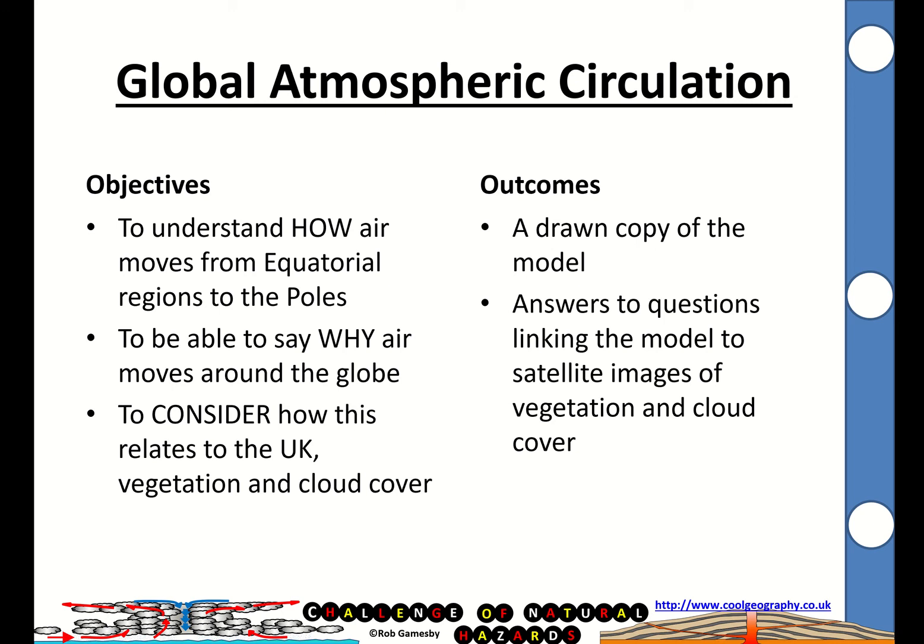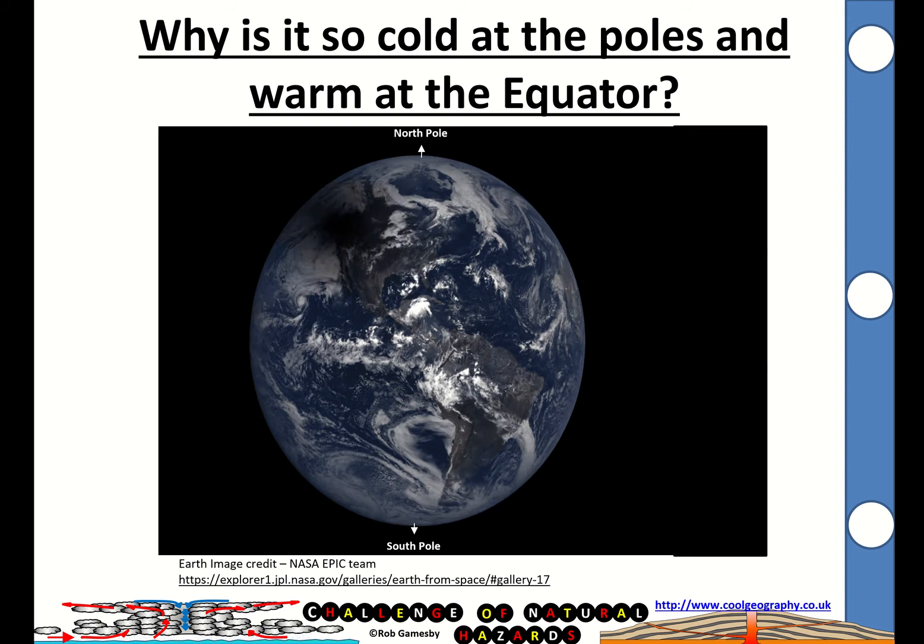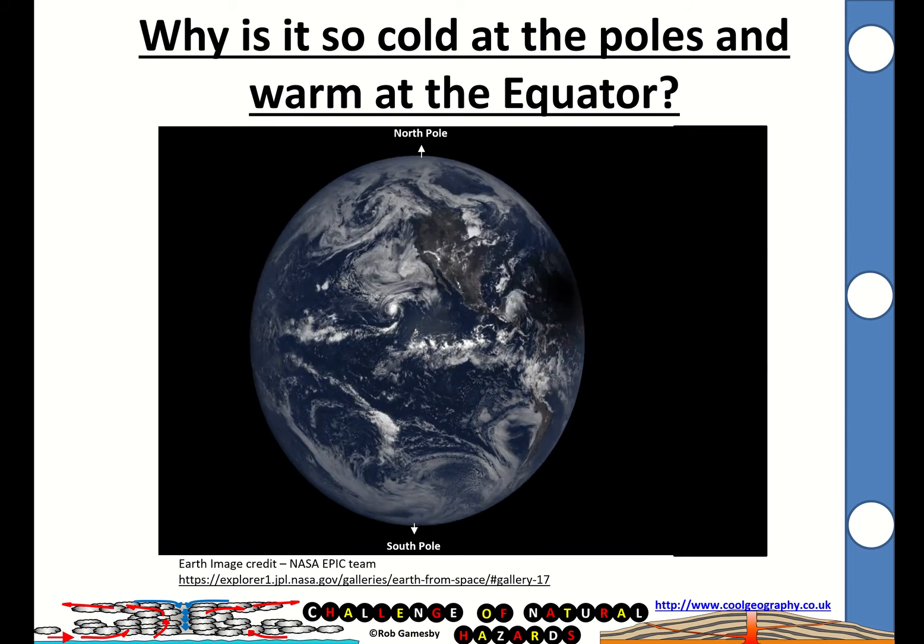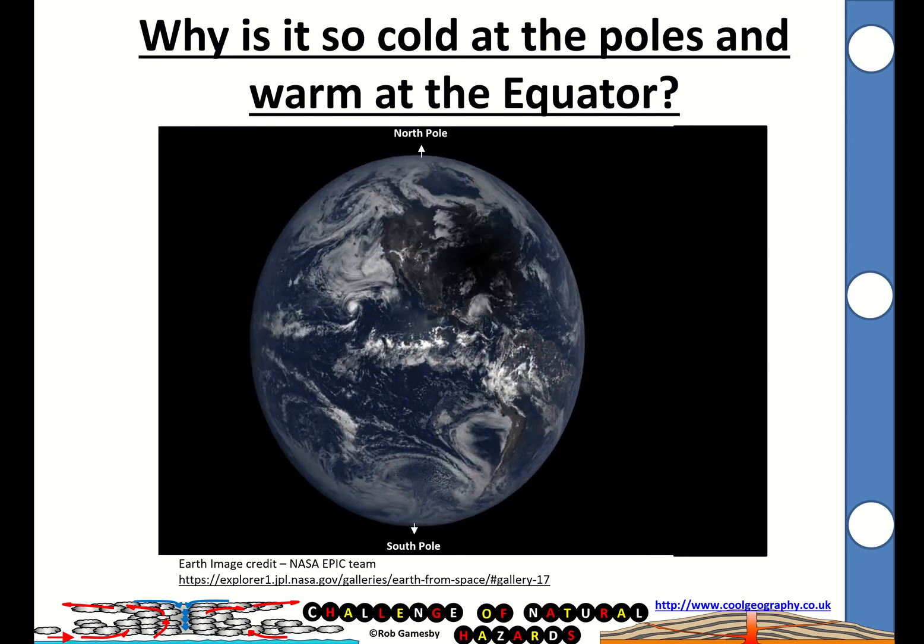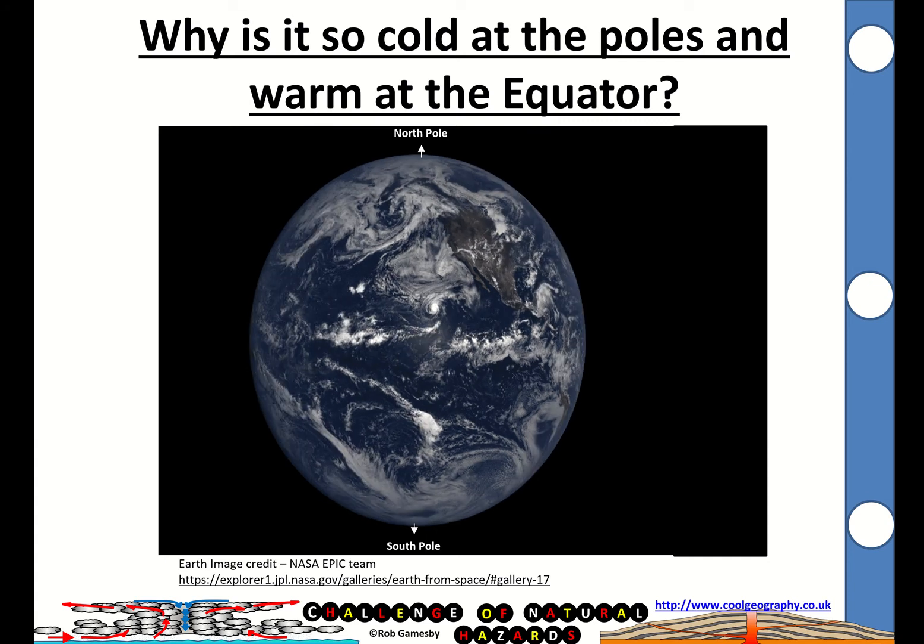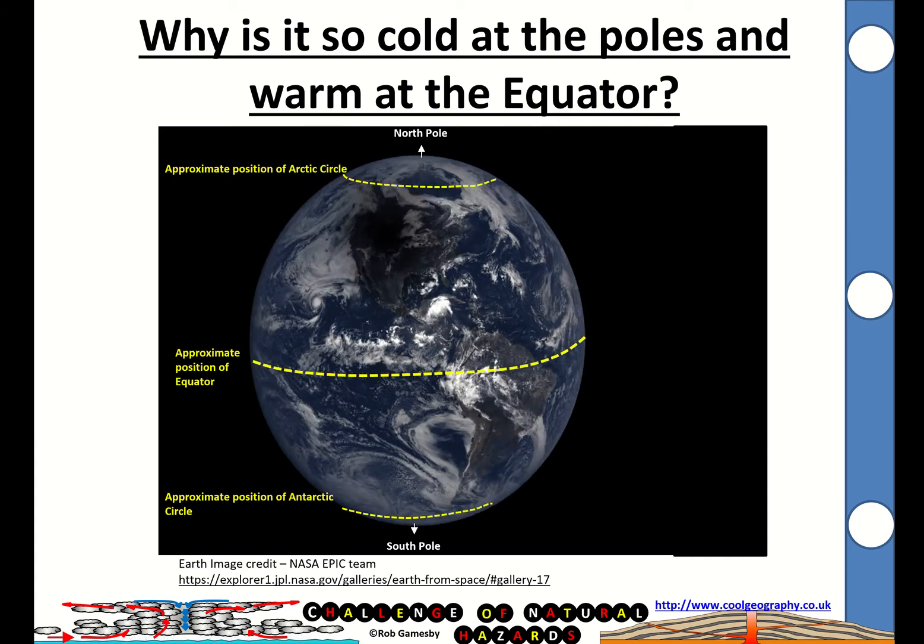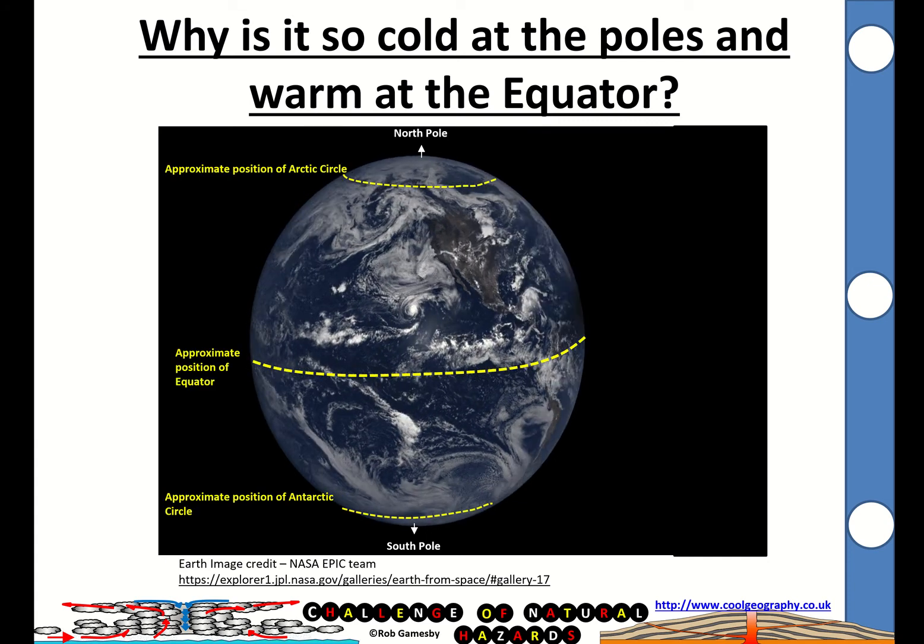This is a GCSE explainer for global atmospheric circulation. We're just going to have a think about this first. The whole circulation of the atmosphere is due to the fact that we've got a big difference in temperature between our equatorial regions and the poles.